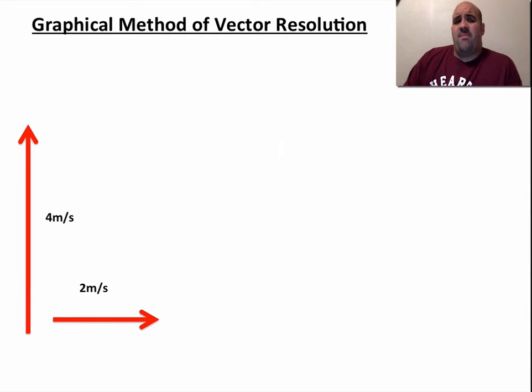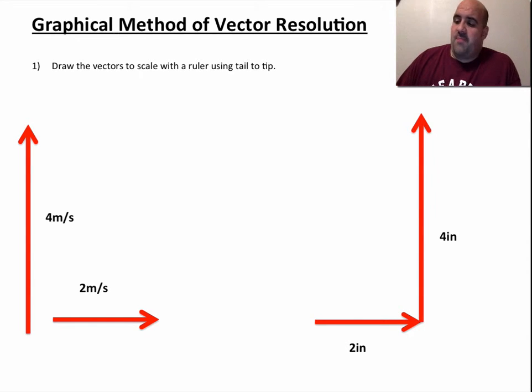The last way is a graphical method of vector resolution. What that simply means is you can draw these vectors to scale on graph paper. These are actually drawn to scale using pixels on PowerPoint. But if you decided to set up a scale whereby 2 meters per second is equal to 2 inches, then basically our scale here is 1 meter per second is 1 inch.